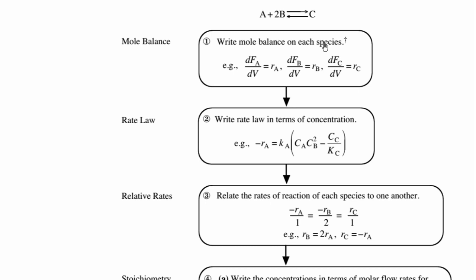But here you have to write for each species involved in the system, like dFA/dV = rA for species A, then for species B, dFB/dV = rB and so on. Then we have to write the rate law in terms of concentration.